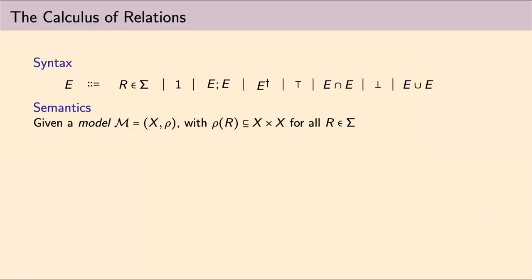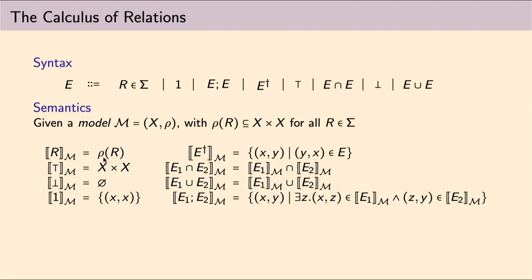Semantics, instead, is given in terms of a model, where a model is a pair made of a set X together with a function ρ, which basically interprets the relational symbols in the signature as an actual relation on X. But then the semantics of R is pretty simple. It's just applying ρ to R. And the rest of the semantics is pretty simple. Maybe it's worth noticing that the composition of relation actually corresponds to the relational product.